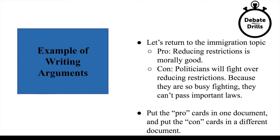Perhaps we title that document something about ethics and immigration. Then separately, for the con argument, we'd find articles about why politicians will fight over reducing restrictions and why they can't pass important laws when they're fighting. We'd put all those cards into a separate document with a separate title on our computer. At the end of this, for each argument on your pro-con list, you should have a word document containing evidence to support that argument, which you can reference during a debate round.